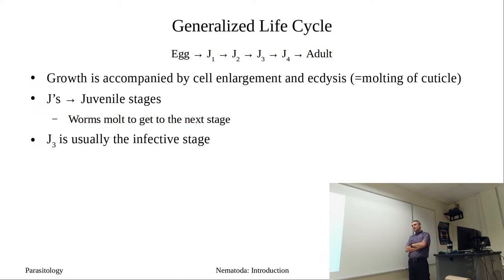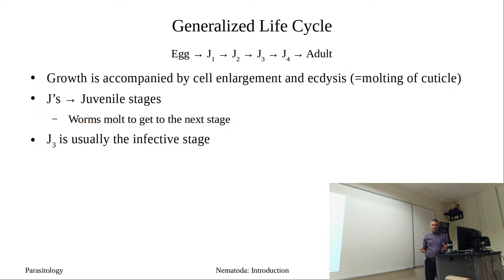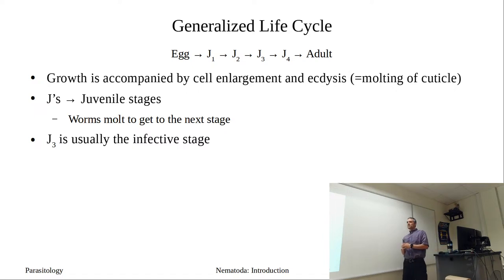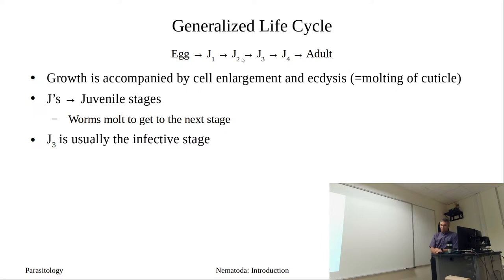To get to the next stage, the cuticle must be molted. Going from J1 to J2, the cuticle molts and cells enlarge — that's how the worm grows. Many cells enlarge, though some organs exhibit mitosis. The typically infective stage is J3. If you're unsure, J3 is probably correct, unless the infective stage is the egg, which would then require a J3 to have developed inside that egg before it can cause infection.